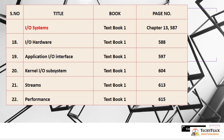The fourth subtopic is Input Output Systems, Chapter 13, starting at page 587. Topics include: Input Output Hardware at page 588, Application Input Output Interface at page 597, Kernel Input Output Subsystem at page 604, Streams at page 613, and Performance at page 615.